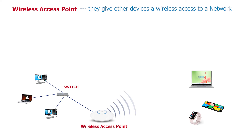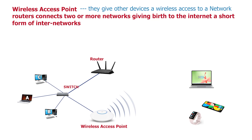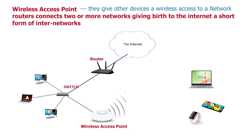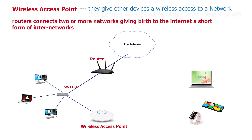In most cases, people mistake wireless access points for routers, but these two are completely different in their operations. As we said in our previous lesson, routers connect two or more networks together, giving birth to what we call the internet — a form of inter-networks. A wireless router serves the function of both an access point and a router. An access point, on the other hand, only connects wireless-capable devices within the same network by wireless means, called Wi-Fi.